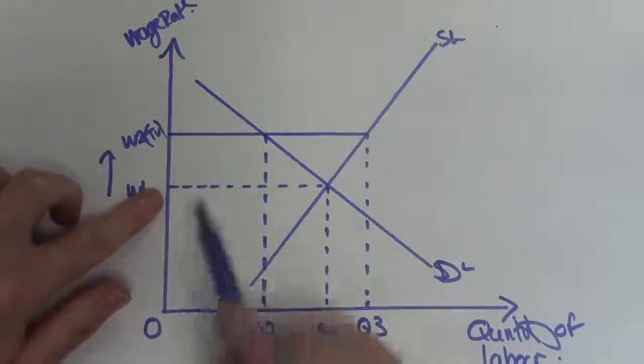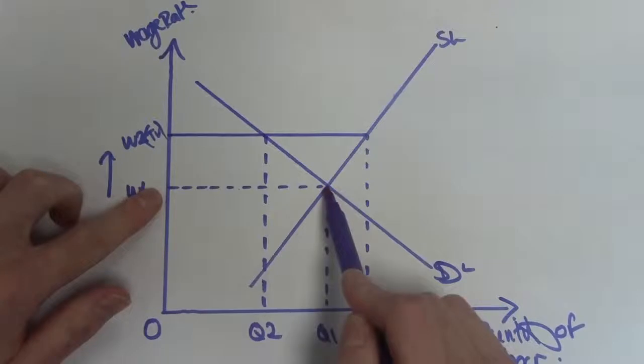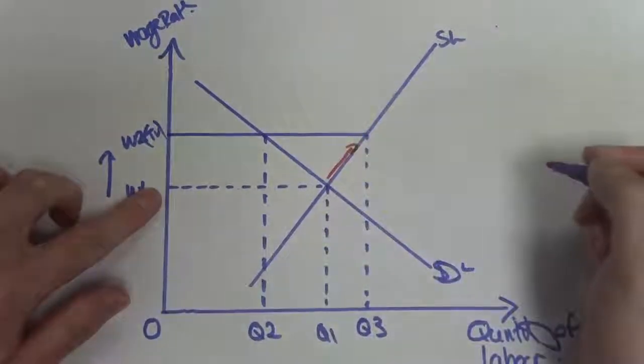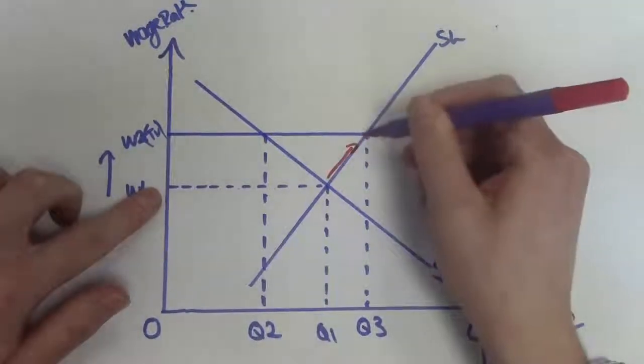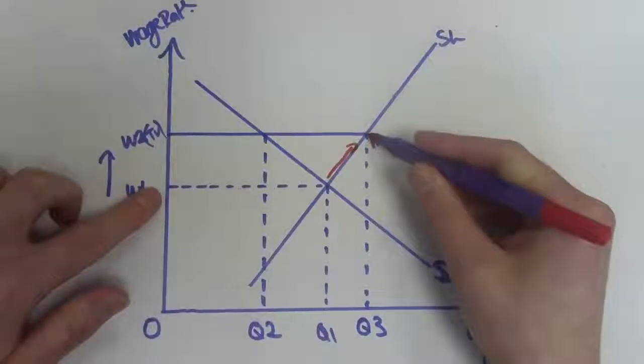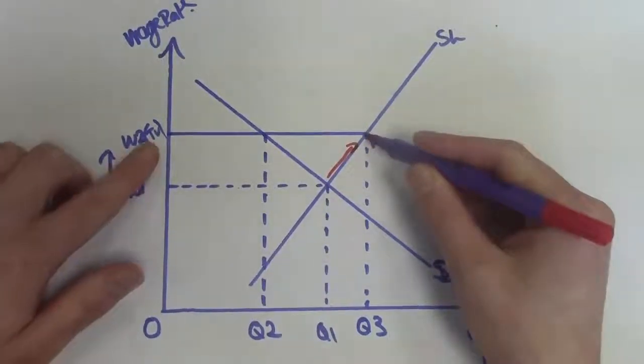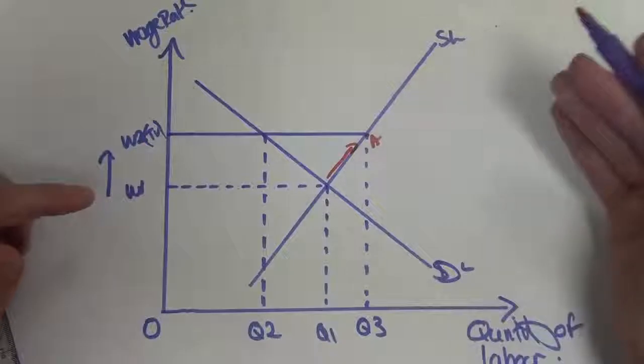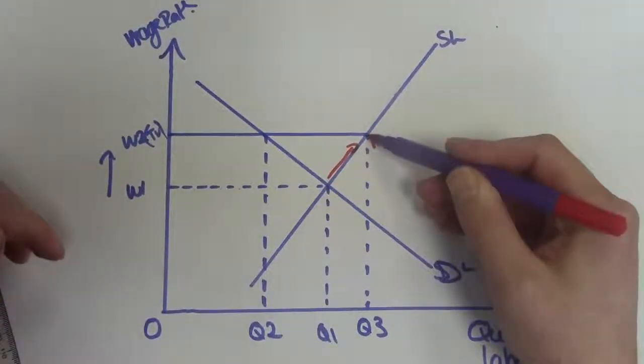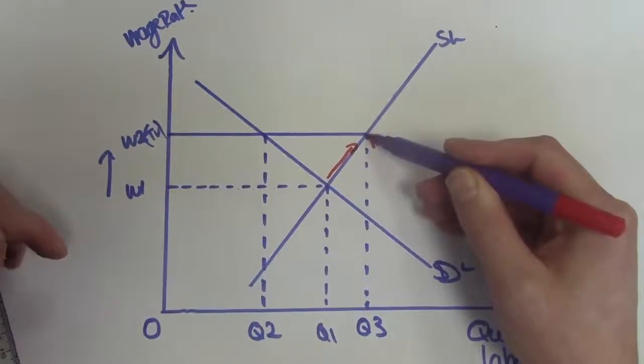For employees working in this industry, if the firm increases the wage rate, that causes a movement along the supply curve and we reach this point here, Point A. With Point A, people might think, well look, they've increased the wage rate, I would want now to work for that industry or to work for that firm. And so more people are willing and able to supply their labor.